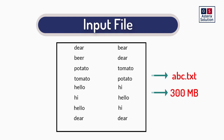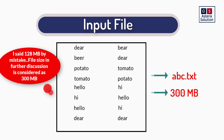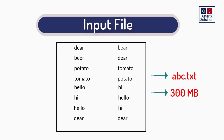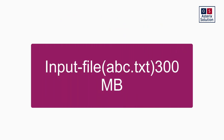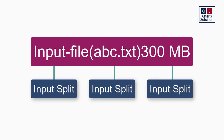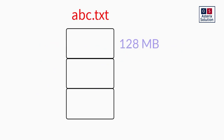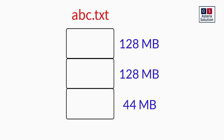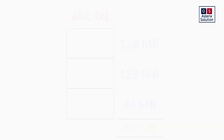Consider this file is named abc.txt and its size is 300 MB. When you submit this file using the hadoop -put command, it will be stored into HDFS and broken into three parts: 128 MB, 128 MB, and 44 MB, which sums up to 300 MB. The first thing that happens is the file is broken into blocks.